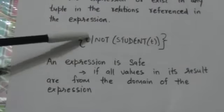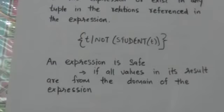For example, see this expression. In this expression only the student relation is referenced. So the domain of this expression is the set of all attribute values appearing in some tuple of the student relation.